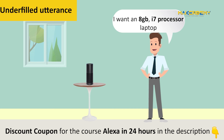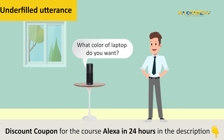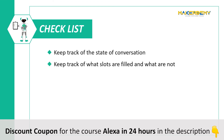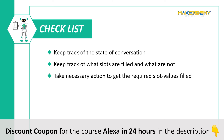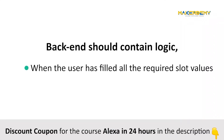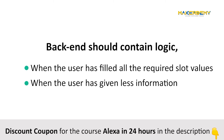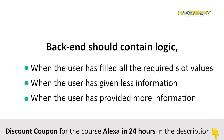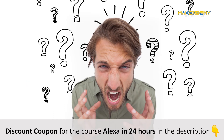So when the user forgets to provide information for the color slot in our laptop recommending skill, Alexa should realize the user has not given that information and prompt accordingly. Our skill must keep track of the state of the conversation — what slots are filled, what are not — and take necessary action to get the required slot values filled. To do this, we need to track every step of the interaction, which means writing a huge amount of backend code logic: logic for all required slots filled, for underfilled utterances, and for overfilled utterances — all possible permutations and combinations. Trust me, writing backend code for this is a real pain.